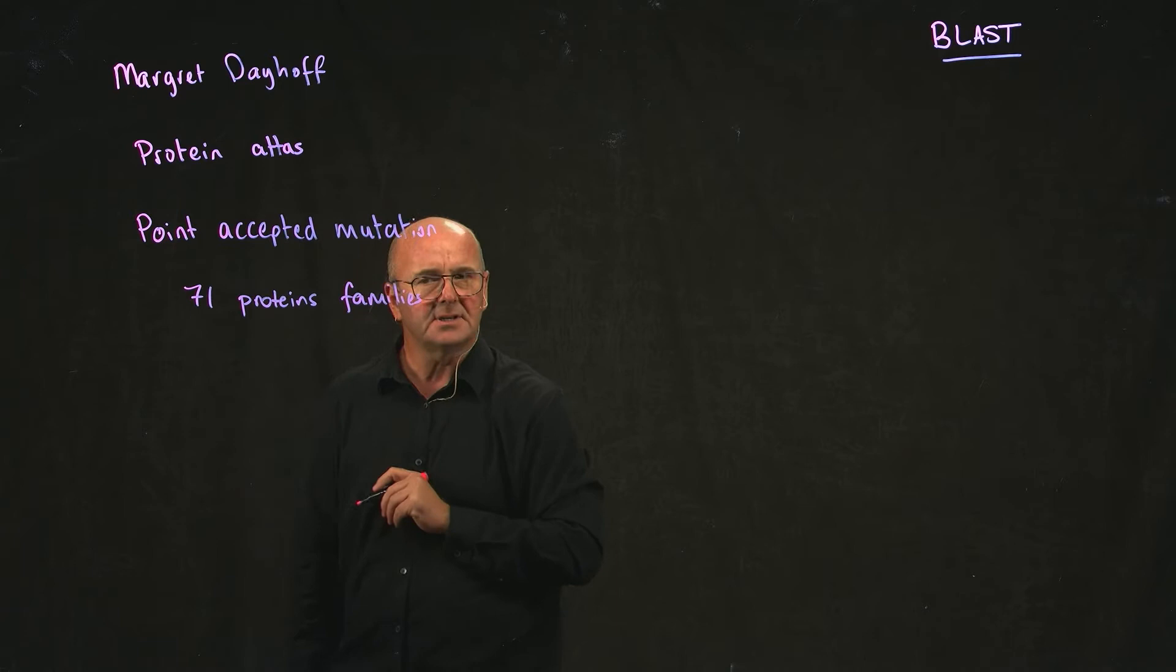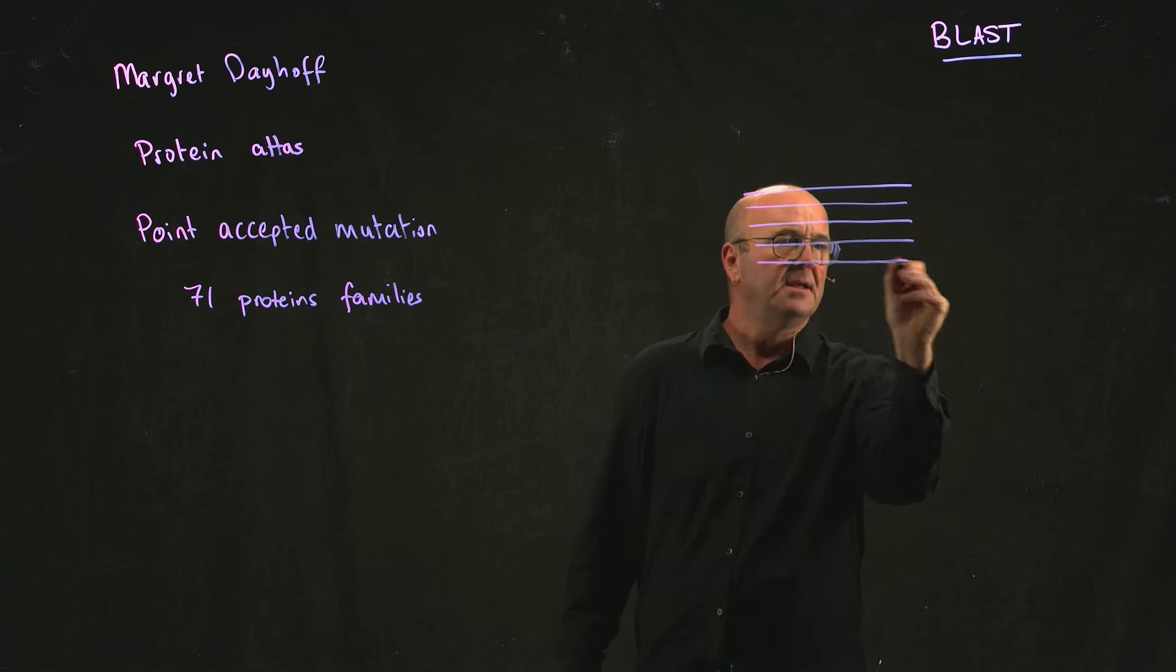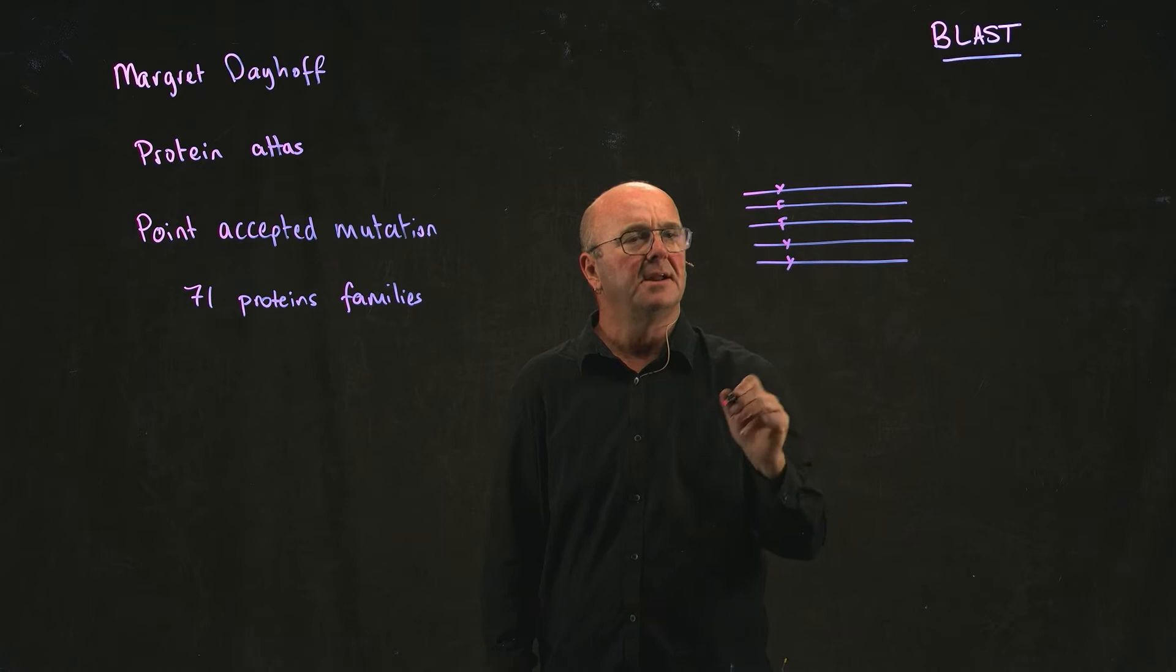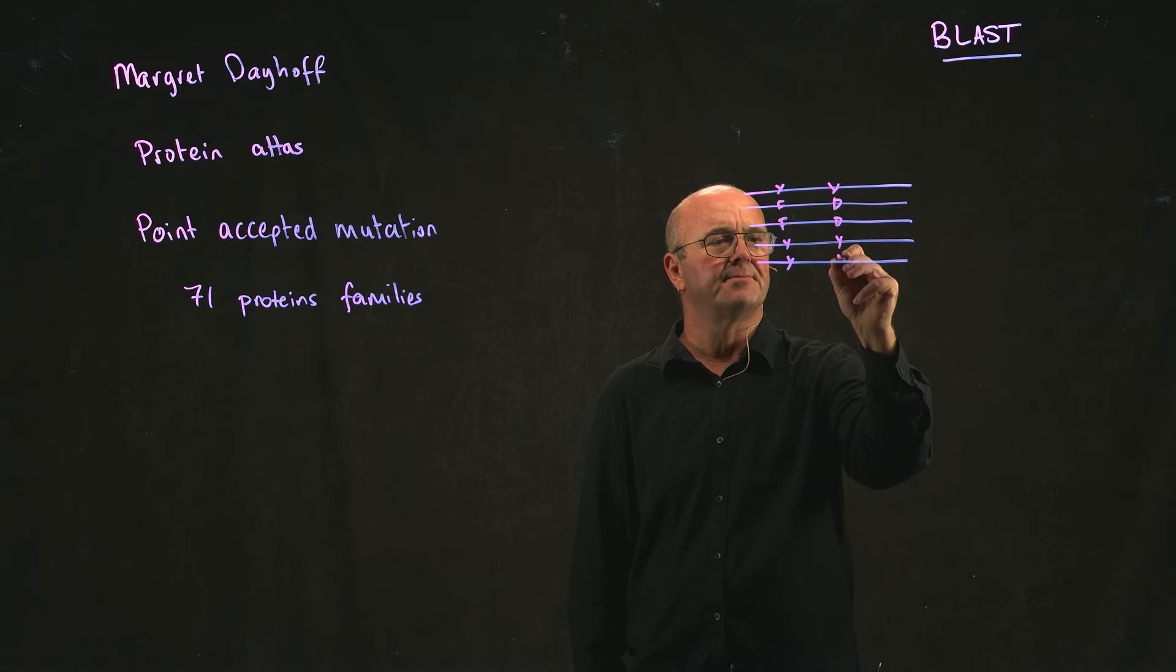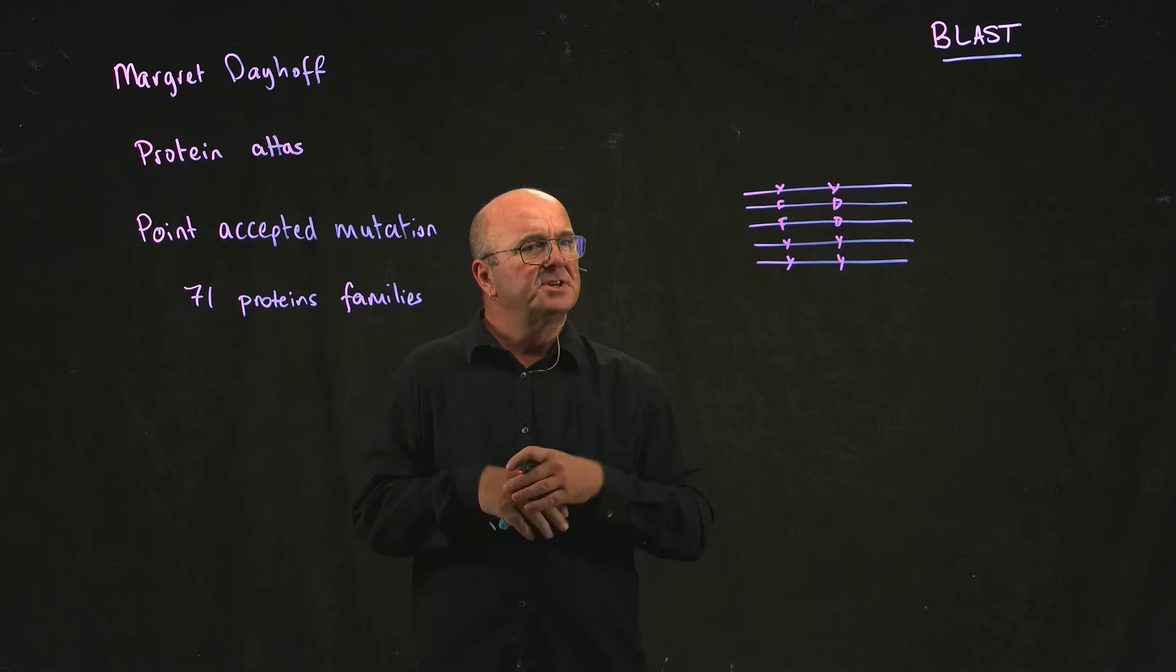What Dr. Dayhoff did was to take these protein families and to make very careful alignments of them, and then to count every time you switch from a tyrosine to a phenylalanine, and every time you switch from a tyrosine to an aspartic acid. In fact, she didn't just focus on tyrosine and aspartic acid and phenylalanine, because that would be a bit weird.